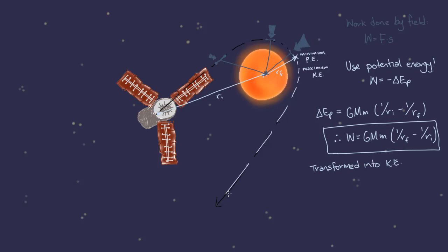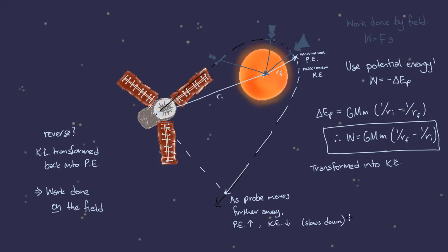If we were to look at the reverse situation, with the probe coming back around the sun and traveling away, we'd find that the probe is doing work on the field by converting its own kinetic energy back into potential energy, and thus conserving total energy of the system.